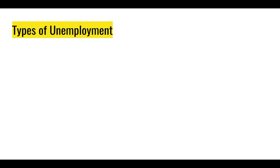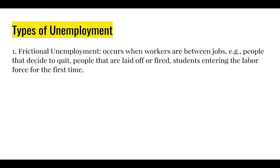There are four types of unemployment IB wants you to know. The first two have no diagrams — they're pretty simple. First is frictional unemployment: this is simply when you are between jobs. People can be between jobs for many reasons — you could quit, get fired because you did a bad job, or get laid off when the economy is bad and your employer has to let you go. Students entering the labor force for the first time are also frictionally unemployed. It's probably the most common type and one of the largest chunks of unemployment found in most economies.